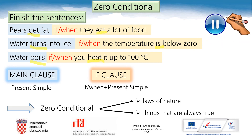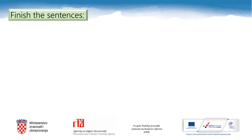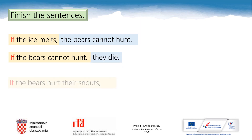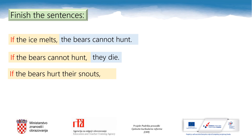Please stop the video and copy this into your notebooks. Now let's practice zero conditional. Finish the sentences: If the ice melts — here is my solution — the bears cannot hunt. If the bears cannot hunt — they die. If the bears hurt their snouts — they cannot smell their prey. How similar or different are your sentences?